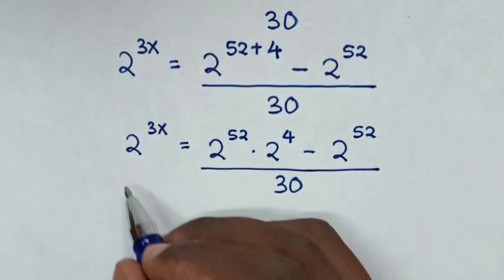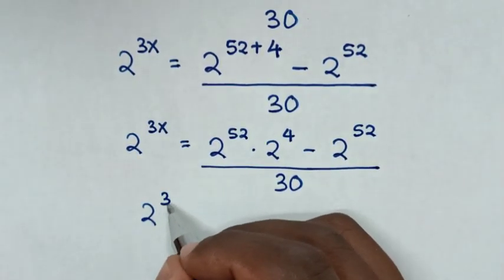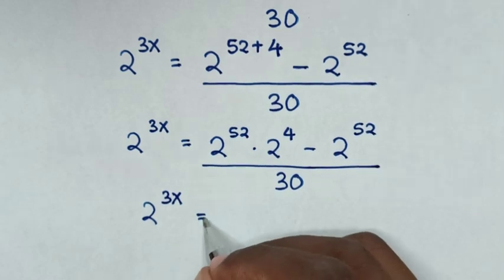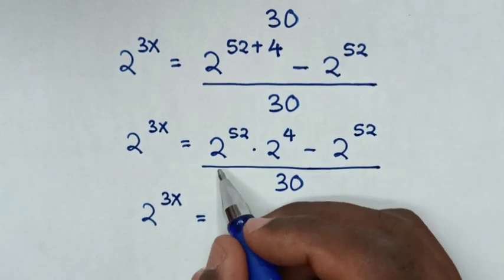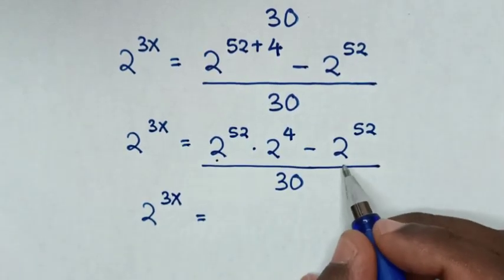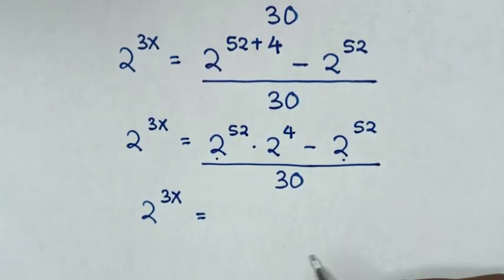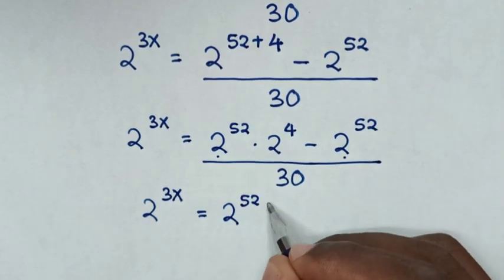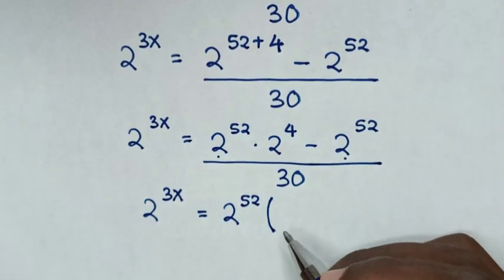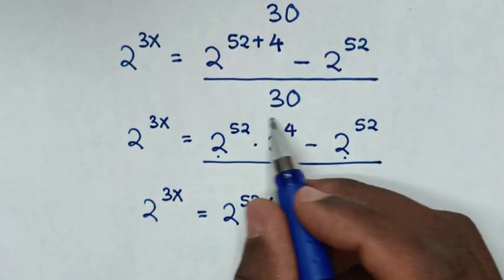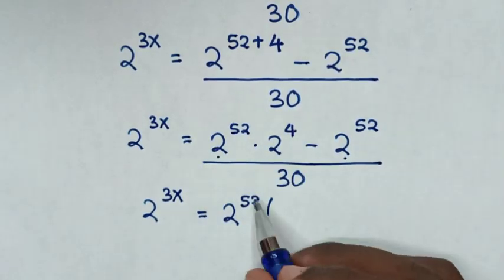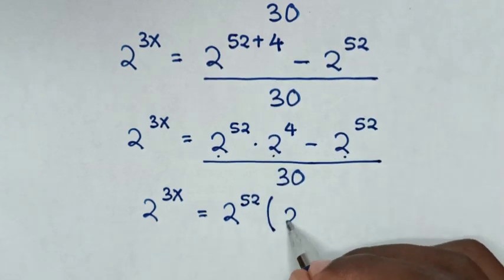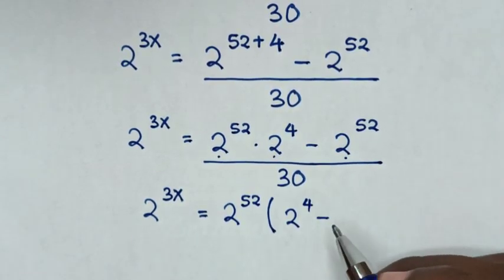It will be 2 power of 3x is equal to: here 2 power of 52 is common, so we take 2 power of 52 out of the bracket, then divide by 2 power of 4.